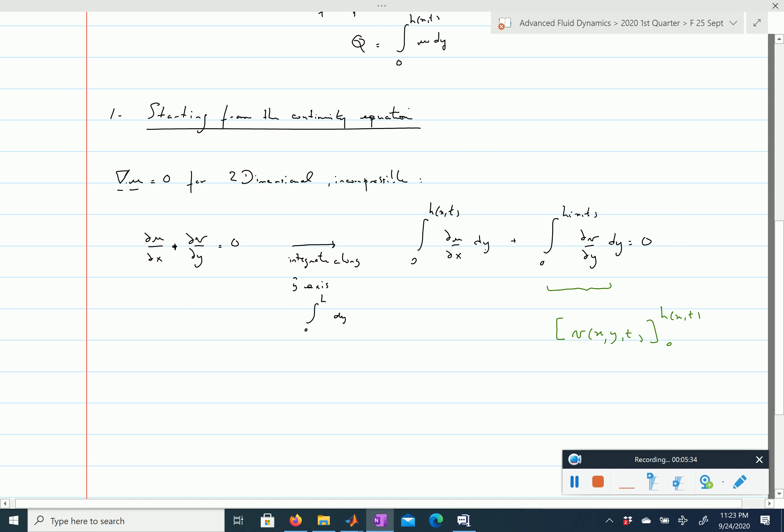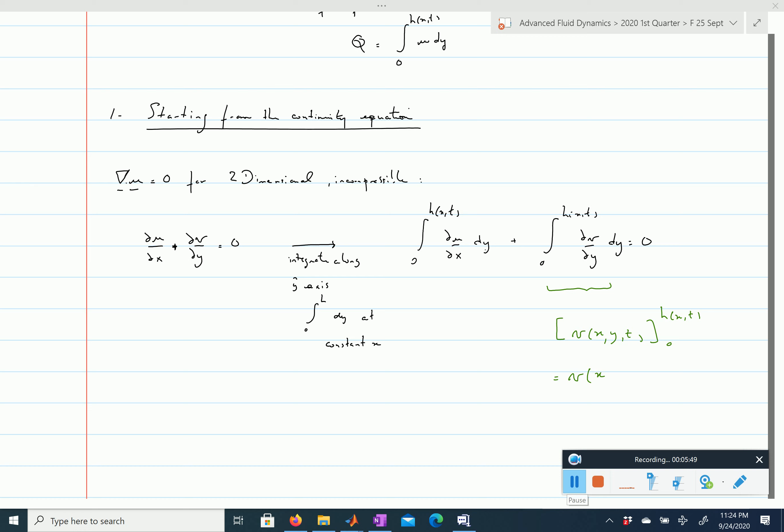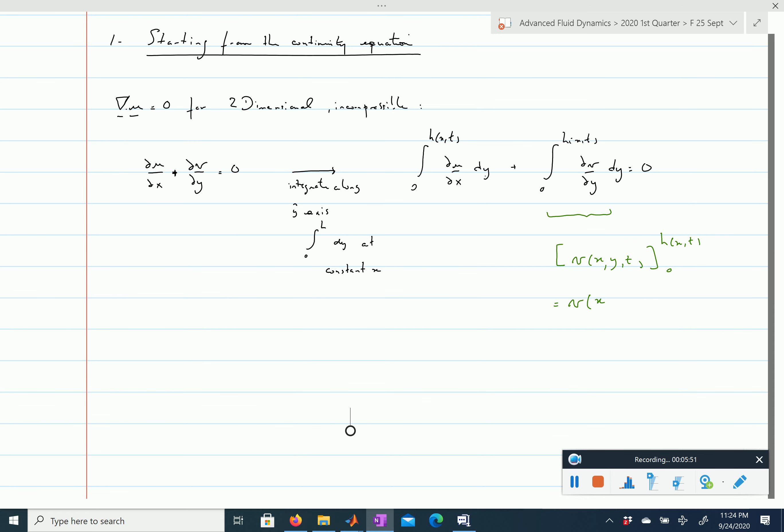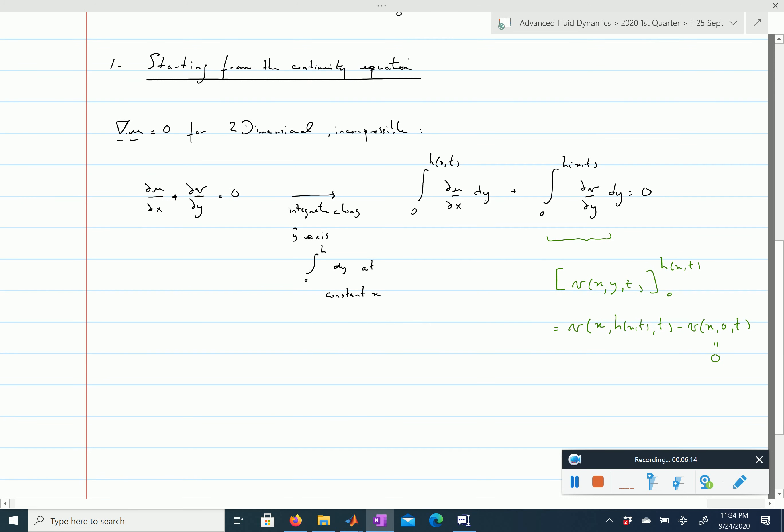We're integrating at constant x. This yields v at (x, y=h(x,t), t) minus v at (x, y=0, t). But v at y=0 equals zero because here we have a flat wall. We haven't discussed boundary conditions yet, but I think you can see where this is coming from.